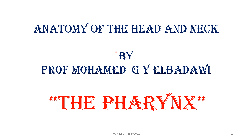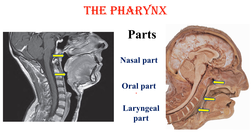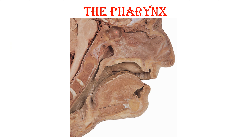In this session, we are going to describe the anatomy of the pharynx. Let's start by the parts of the pharynx. It has a nasal part behind the nose, as you can see over here in that cadaveric specimen, and an oral part behind the mouth, the same in that specimen, and a laryngeal part — the lowest part behind the larynx, which you can see over here.